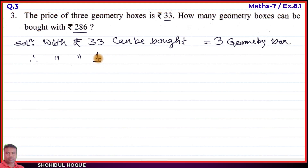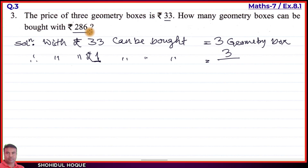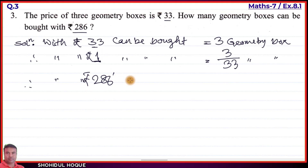With rupees 1, the number of geometry boxes that can be bought is 3 divided by 33. Now, with rupees 286, the number of geometry boxes equals 3 divided by 33, multiplied by 286.